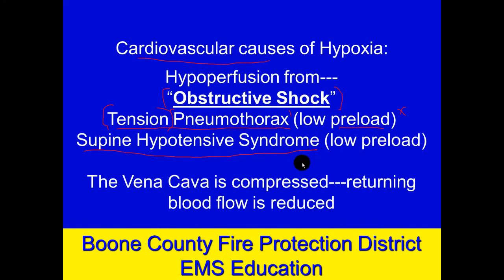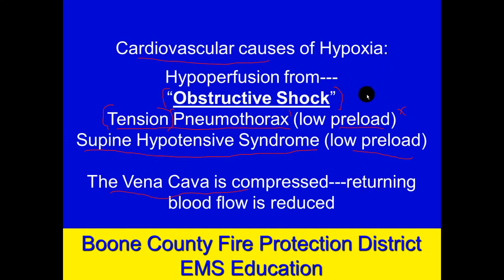The same thing can happen with the pregnant uterus. A patient who is 20 to 24 weeks along — roughly two-thirds through gestation — with a large, heavy fetus can have that fetus pressing posteriorly on the vena cava, reducing preload. So 'babies and bubbles' — both causing vena cava compression and reduced preload. Remember, the heart can only pump out what is brought back to it. This is hypoperfusion from obstructive shock.